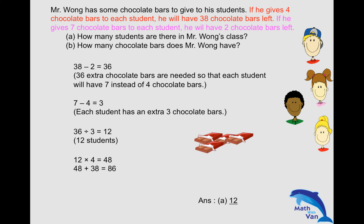Now let's use scenario two to check our answer. Seven chocolate bars, 12 students — I will need 84. But we were told that he would have two chocolate bars left, so 84 plus two, which is 86. So that's the answer: 86.